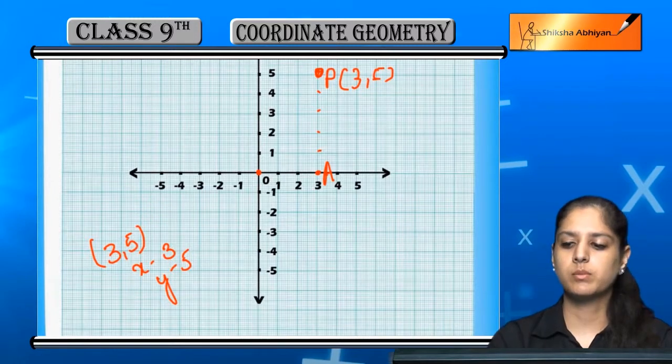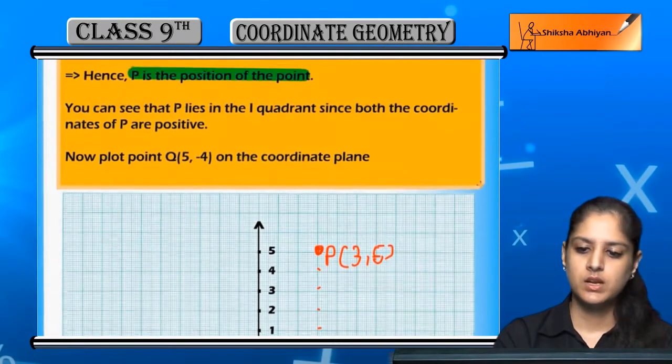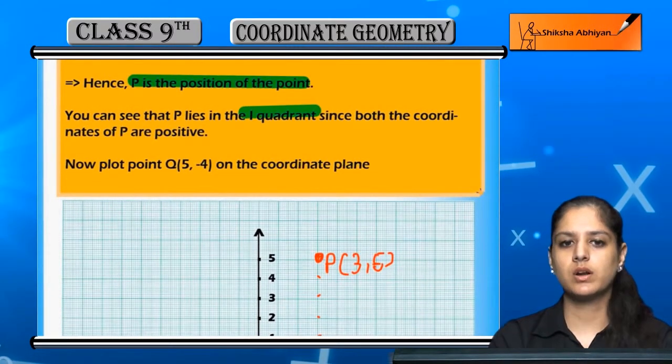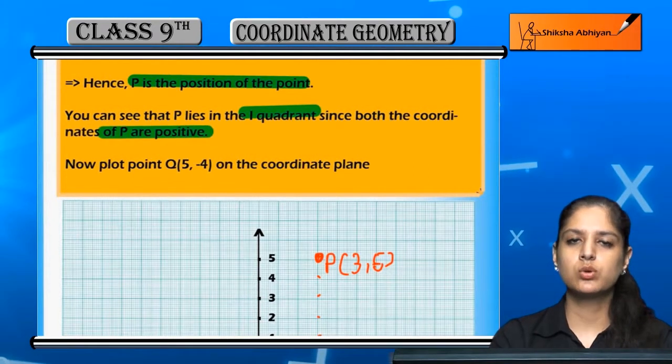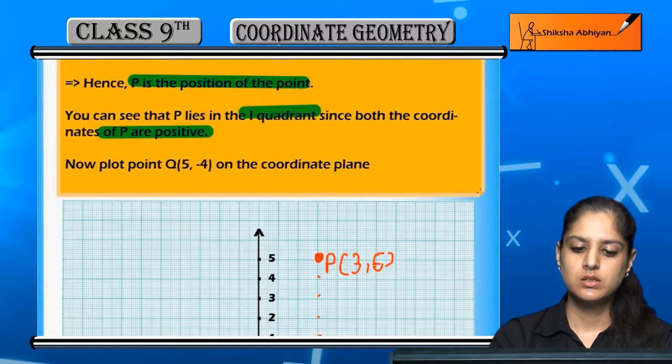Yeh point hai 3 comma 5 jis point ko hame show karna tha. You can observe, ye jo point hai it lies in the first quadrant kyunki P ke dono coordinates positive hai.